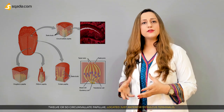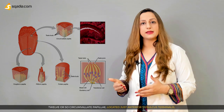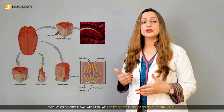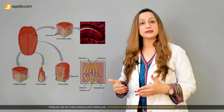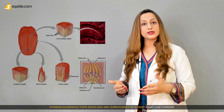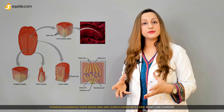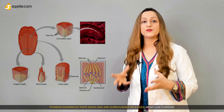Twelve or so circumvallate papillae are located just anterior to the sulcus terminalis. They possess numerous taste buds and are surrounded by a deep moat-like furrow.